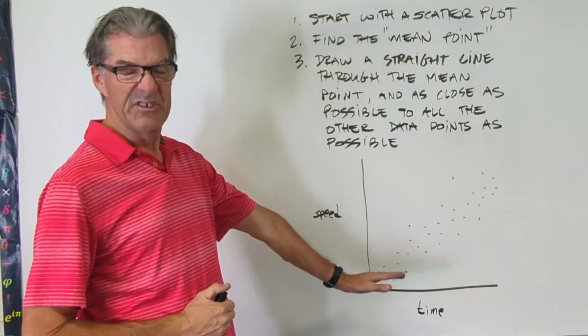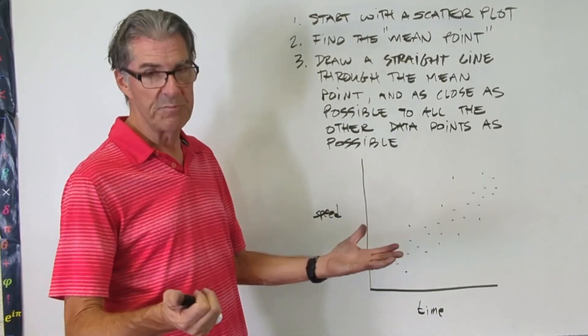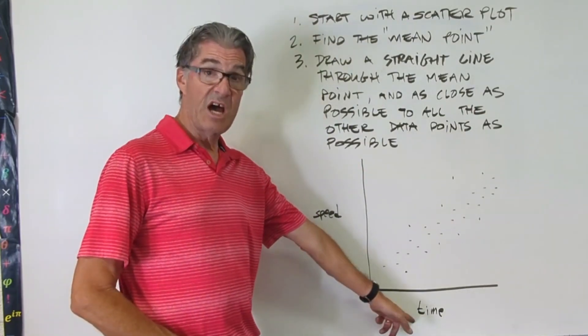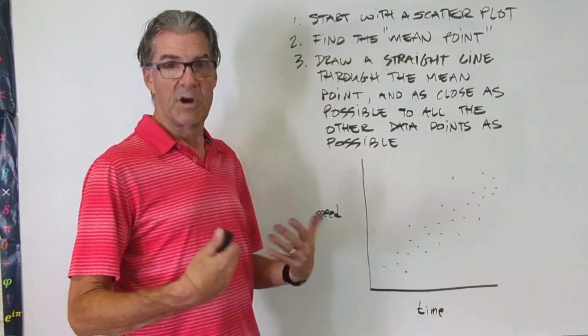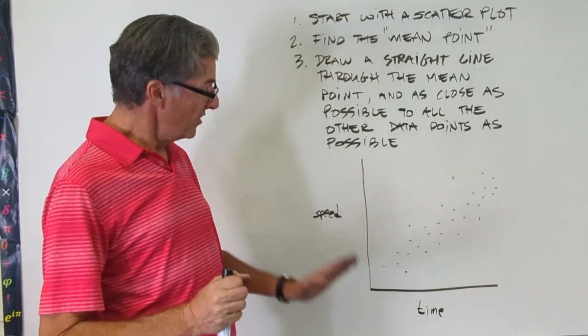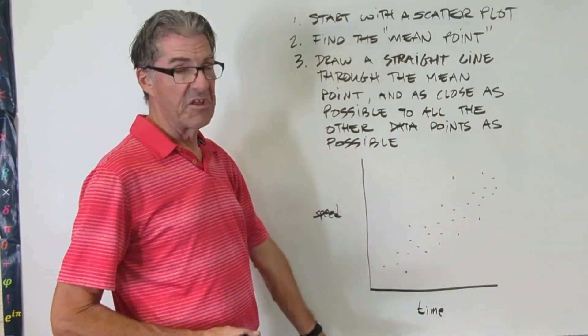So you can see I've got a scatterplot. This is real data or could be real data. I just made it up, but it could be real data. And we're just a simple time versus speed graph, perhaps for an accelerating object. So what we're going to do is we're going to try to draw a best fit line for there.